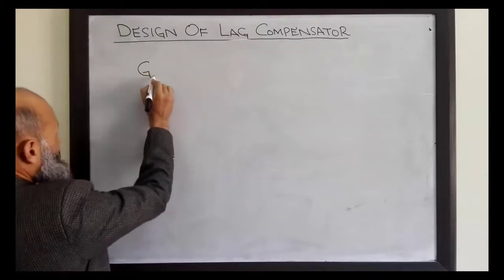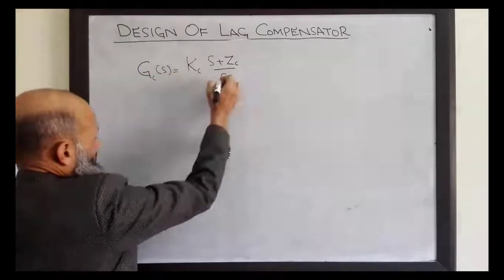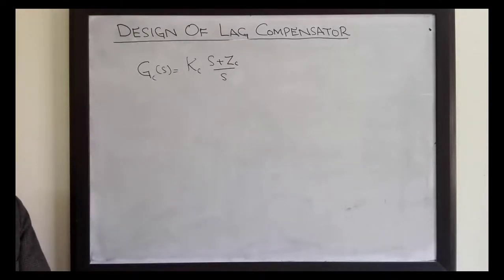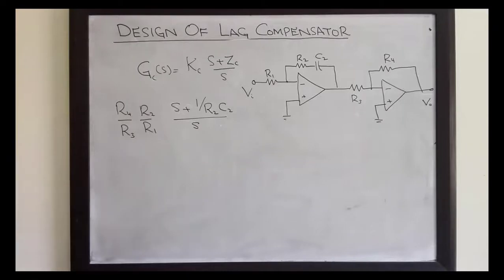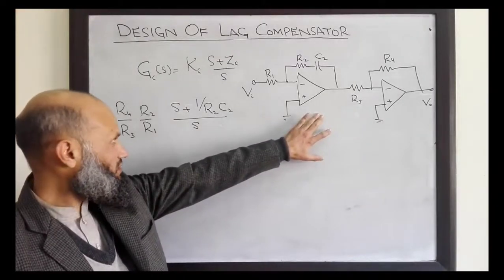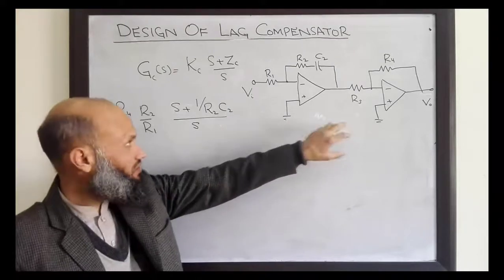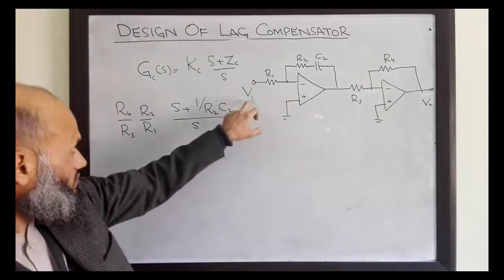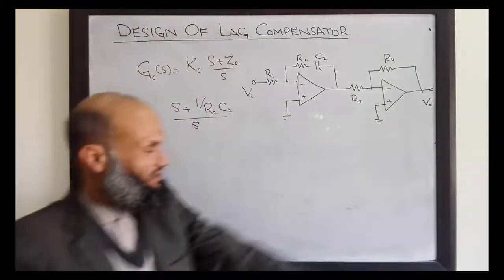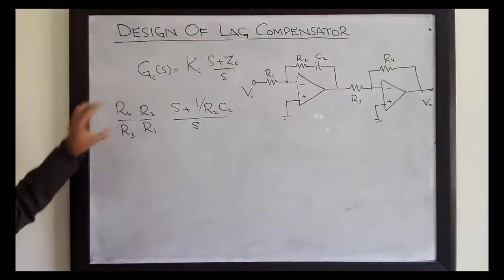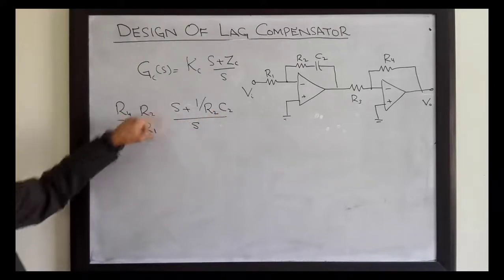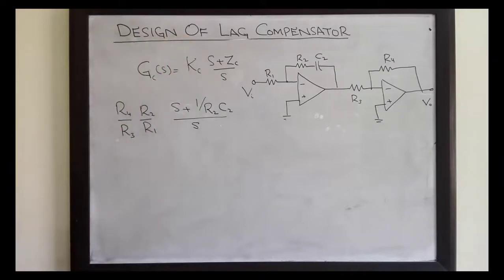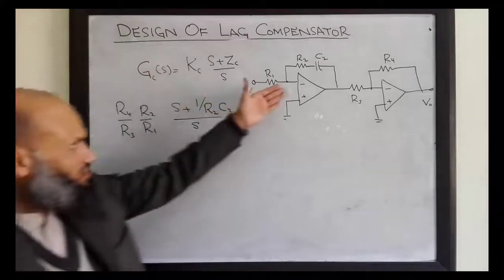The transfer function of the PI controller can be implemented by, for example, operational amplifiers. We have this electronic circuitry and the transfer function between input and output can be easily derived. By appropriately selecting the values of R2, C2 and R4, R3, you can obtain this transfer function. So to implement this controller, you need active elements.